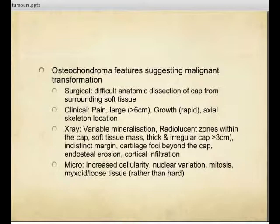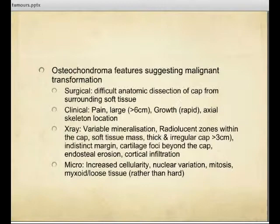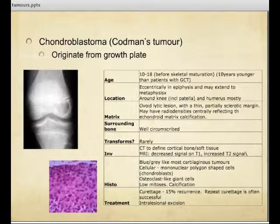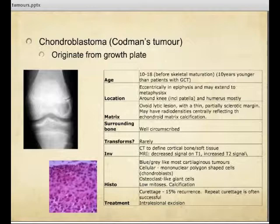Chondroblastoma is commonly seen in the younger age group, 10 to 18 years. It is located eccentrically in the epiphysis but may extend into the metaphysis. It appears as an ovoid lytic lesion with a thin sclerotic margin but is well circumscribed. Treatment includes curettage and intralesional excision. One of the main differentials for chondroblastoma is a giant cell tumour.